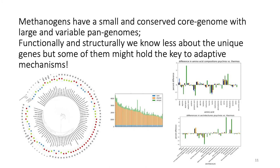So, what does this data tell us? Basically, it tells us that the core is very conserved when it comes to amino acid composition — meaning flexibility and rigidity — and protein domain architectures, meaning secondary structures. We know very little about the unique genes, even though some of them might hold keys to the thermal adaptation mechanisms of methanogens. So, if we want to find out more about those, we will need molecular biology studies.